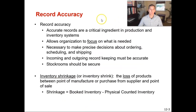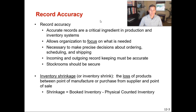Now let's talk about record accuracy. You have to have accurate inventory records, or you're going to be in a lot of trouble when trying to manufacture or sell your products. If you believe you have something in inventory and when you go to grab it it's not there, you're going to have a shortage. Shortages are very expensive — you either have to build something quickly, buy something and have it delivered quickly, or your customers will be unhappy when you can't fulfill their entire order. Record accuracy is a critical ingredient in production and inventory systems because you have to have what you believe you have on hand.